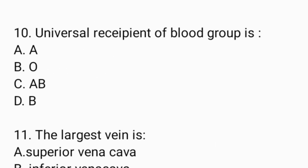Next question: Universal recipient of blood group is — Option A: A. Option B: O. Option C: AB. Option D: B. And the answer is Option C, AB.